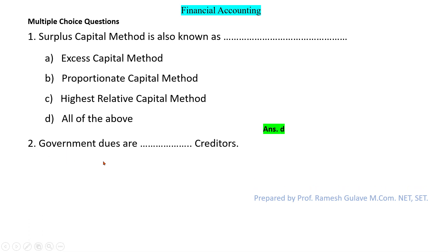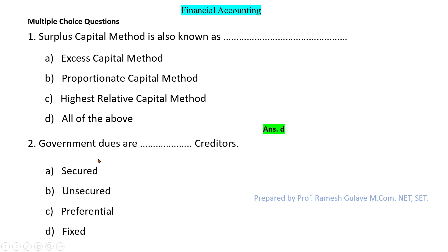The next question says: government dues are blank creditors. In order of payment, creditors are classified as preferential, secured, and unsecured. All government dues are considered as preferential creditors, so option C is the right answer.